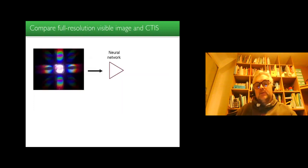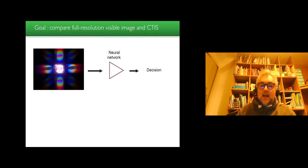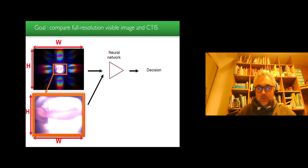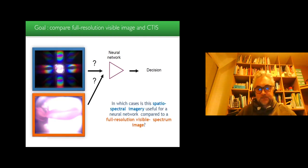So we were wondering what happens if we feed a neural network with such representation, which is usually not given to humans, but the machine could learn from such patterns and take a decision from it. And would the decision be better by comparison with if we had the full chip and we only use the central part of the image with the same resolution here. We take six times the chip. We take a standard RGB image and we compare the performance if we use this CETIS low-cost spectral image in which case is the spatio-spectral image useful for a neural network compared to a full resolution visible spectrum image.